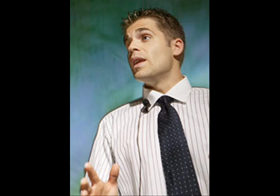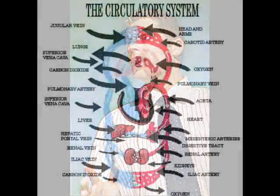As you all probably know, the heart and lungs are part of the body's circulatory system. But there are really three parts: the lungs, which involve the pulmonary circulation; the heart, which is the coronary circulation; and the rest of the system, which is called the systemic circulation.